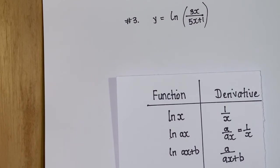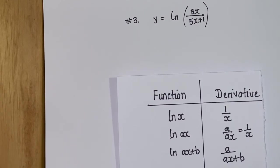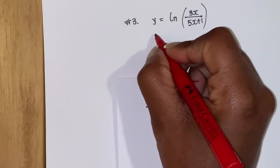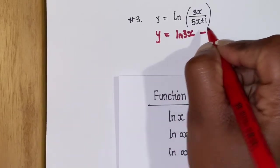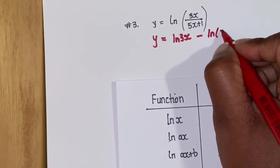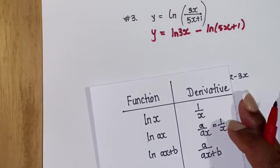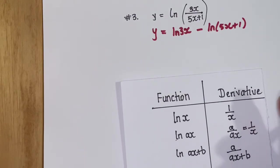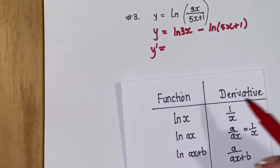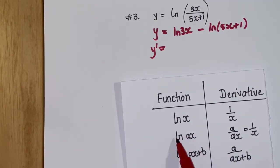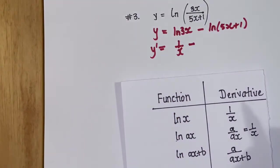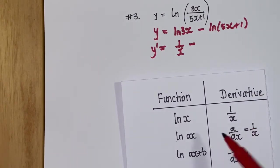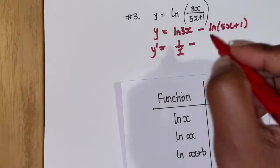Question 3: y = ln(3x / (5x + 1)). This is in the ln(a/b) format, so we rewrite it as ln(3x) − ln(5x + 1). Now we differentiate: ln(3x) following this format gives 1 over x. Pulling back the minus sign, ln(5x + 1) follows the pattern giving 5 over (5x + 1). So y' = 1 over x minus 5 over (5x + 1).